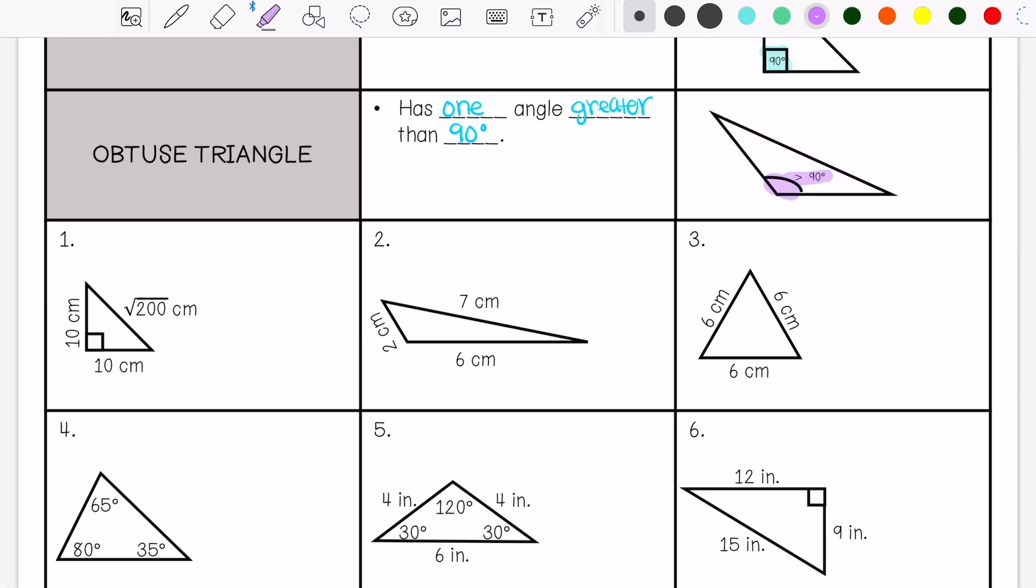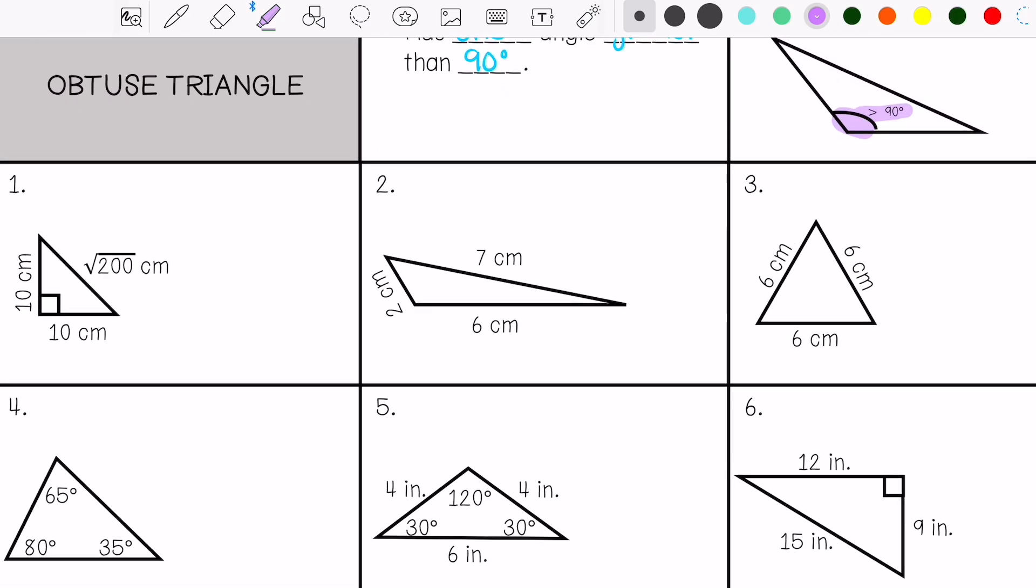So now we're going to classify these triangles. I look at this triangle and I see that these are congruent or equal, so I have two equal sides and I have a right angle. That's what that symbol means. So if I have two equal sides, I am an isosceles triangle. And then if I have one right angle, then I am a right triangle.